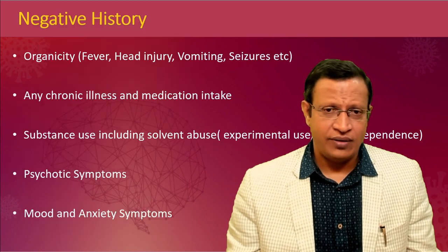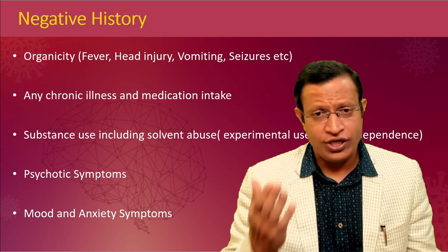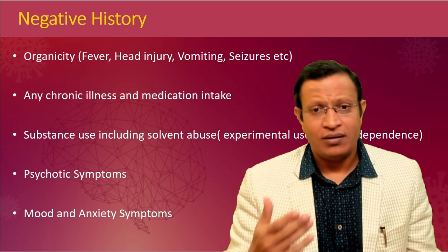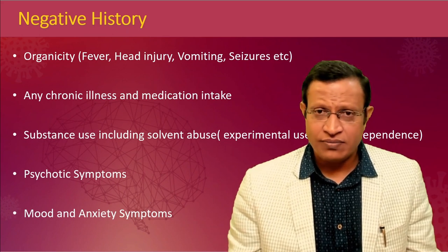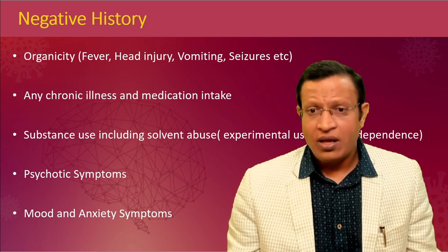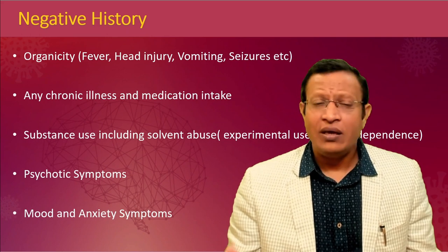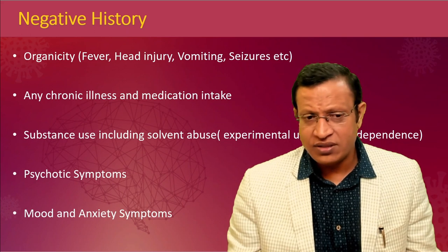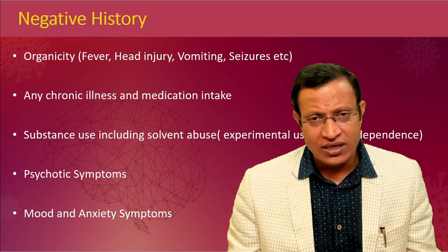For negative history, check for any organicity such as fever, injury, vomiting, or seizures. Ask about any chronic illness or medication intake. Check whether there is substance use — especially solvent abuse — and whether it is experimental, abuse, or dependence. Ask whether there are any psychotic symptoms — mention there are none if absent. Also check for mood and anxiety symptoms in negative history.